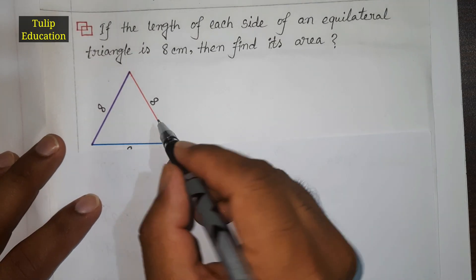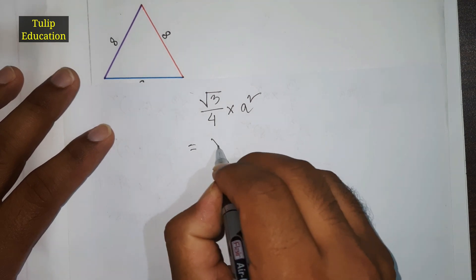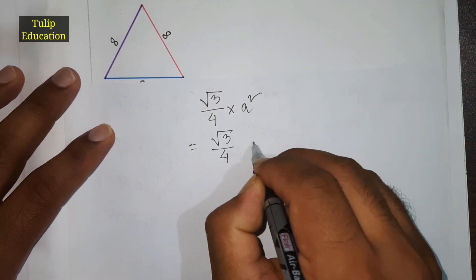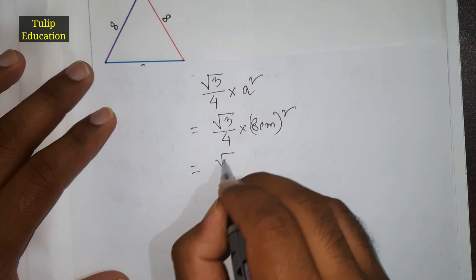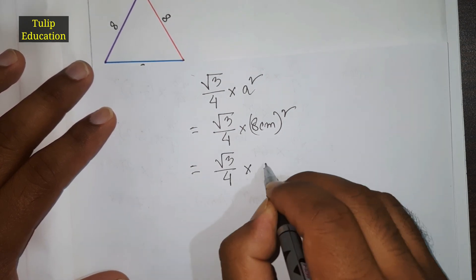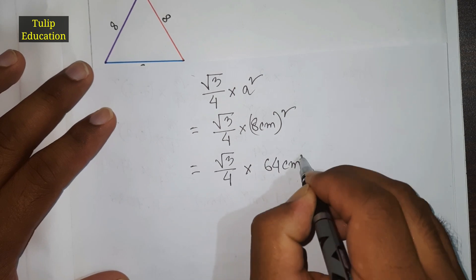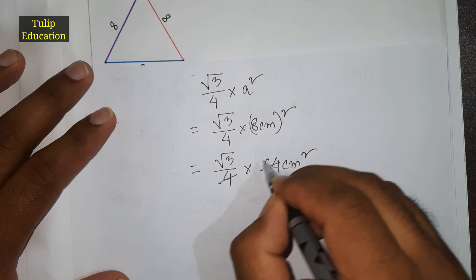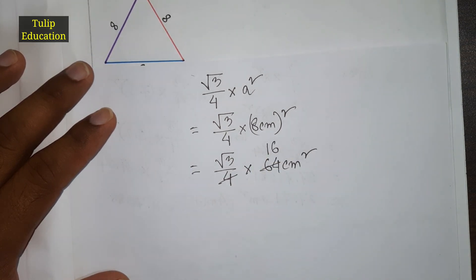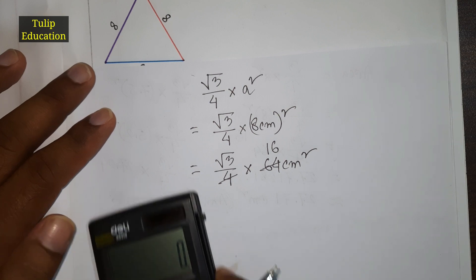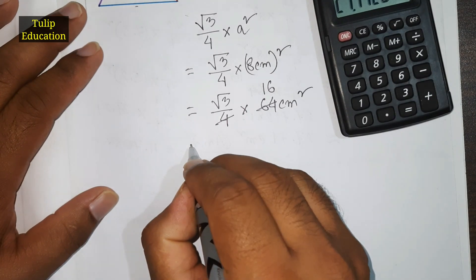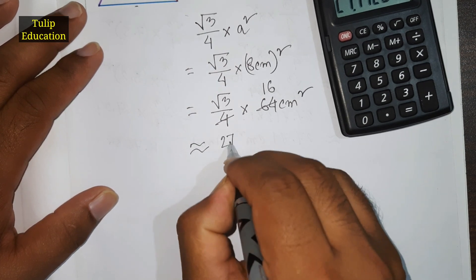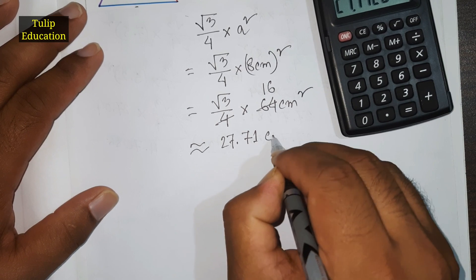The value of a is 8 centimeters here. Substituting, we get root 3 divided by 4, multiplied by 64 centimeters squared. We can divide 64 by 4, and the result is 16. So we get root 3 multiplied by 16, and the result is approximately 27.71 centimeters squared.